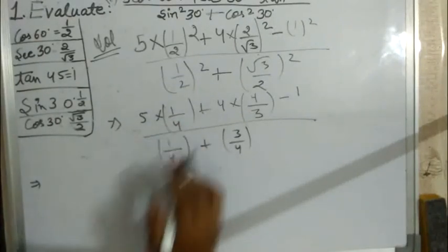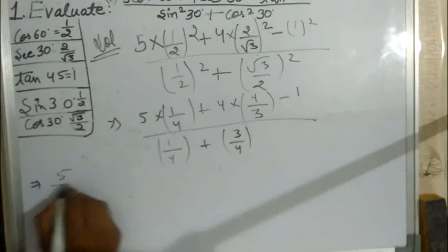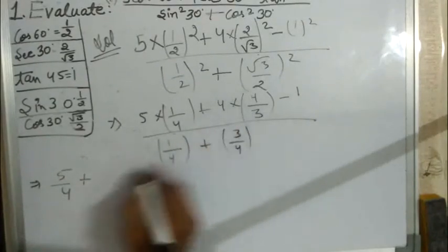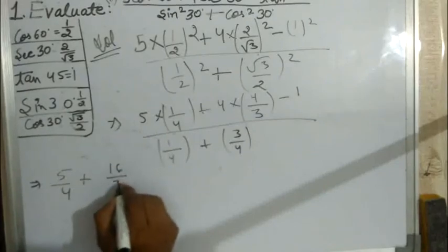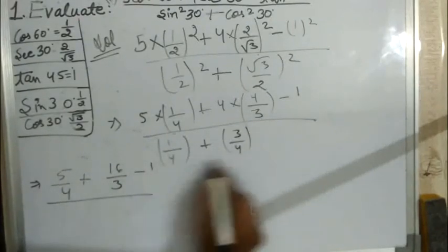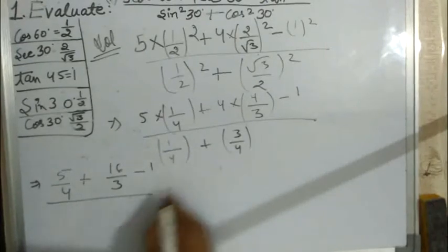5/4 plus, 4 squared is 16 divided by 3, minus 1, this denominator is 4, which gives 12.